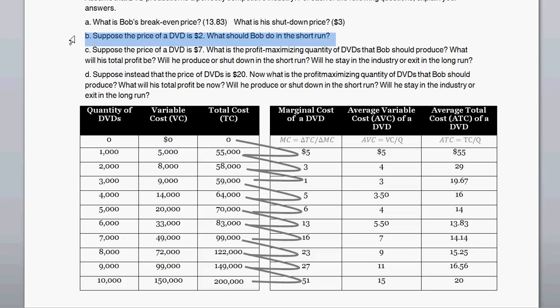For example, if the price of a DVD is $2, what should Bob do in the short run? Because $2 is below the shutdown price of $3, Bob should choose to shut down — it's not bringing enough money to even cover the cost of wages and inputs. A trickier case: what if the price of a DVD were $7? What is the profit-maximizing quantity Bob should produce, and what is his total profit?